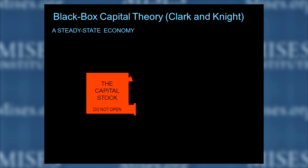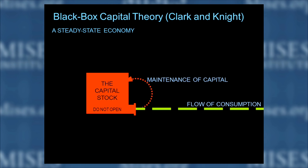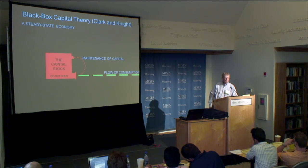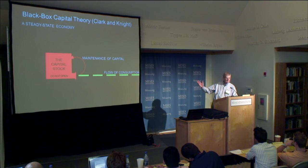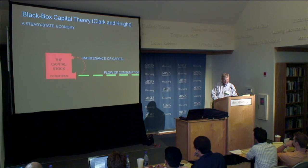Here's the capital stock diagram: you've got the flow of consumption and the maintenance of capital, so there's a feedback. That maintenance has to be just right so the capital stock doesn't increase or decrease — it just stays the same. That's the steady state. The flow of consumption comes out, and the stock plus maintenance constitute the stock of capital. Knight's claim is that the maintenance is just a technical detail — by making it a technical detail, he gets his notion of the stock-flow.